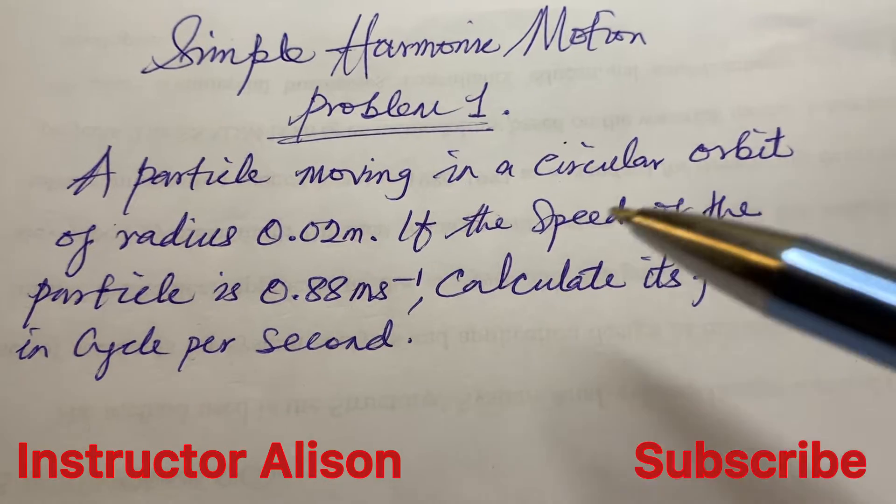If the speed of the particle is 0.88 meters per second, calculate its frequency in cycles per second.